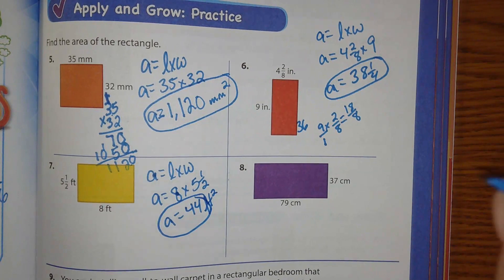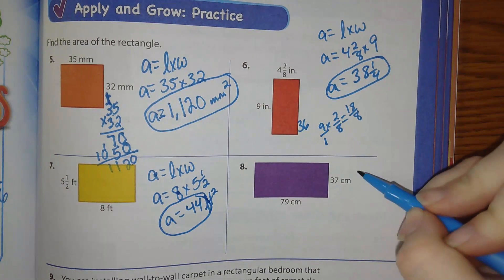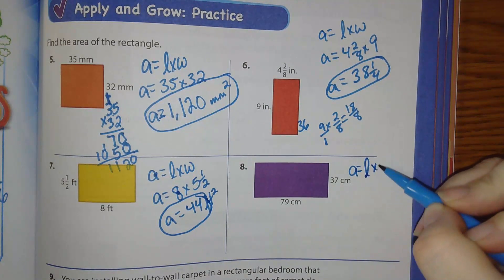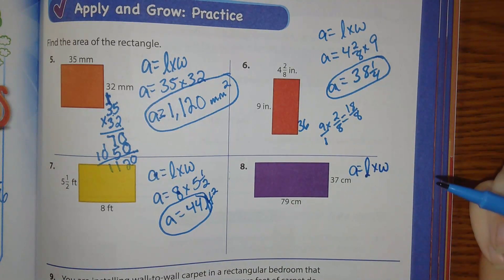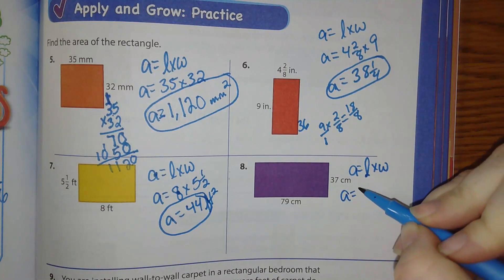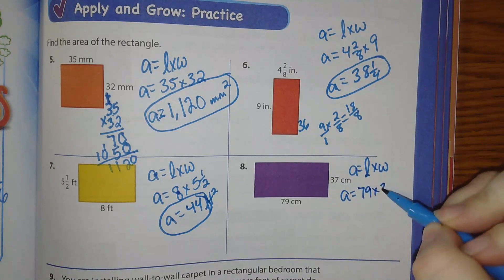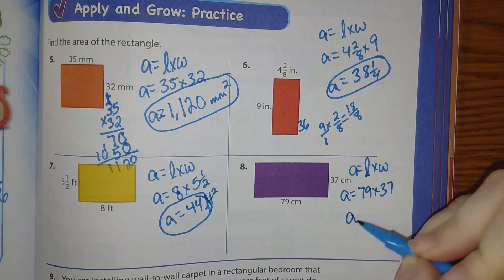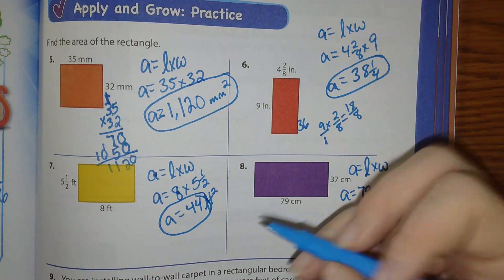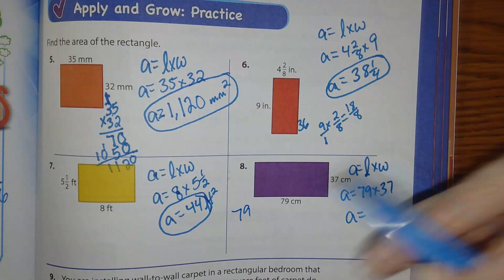Let's take a look at number 8. A equals length times width. So L times W. A equals 79 times 37. A equals. A is the area. I'm going to do 79 times 37.